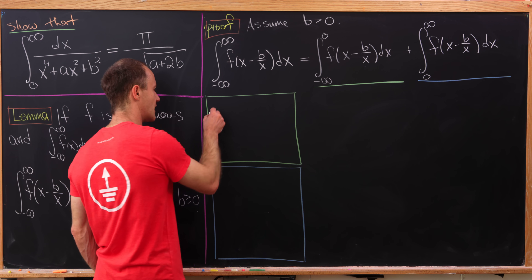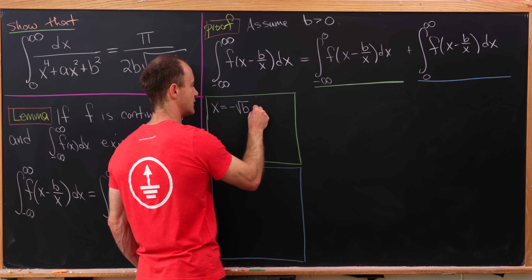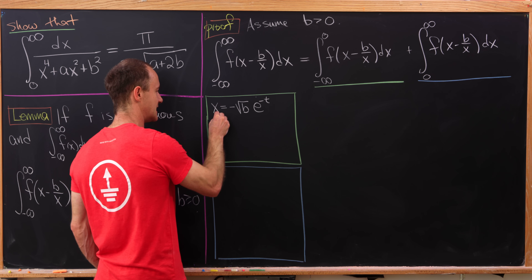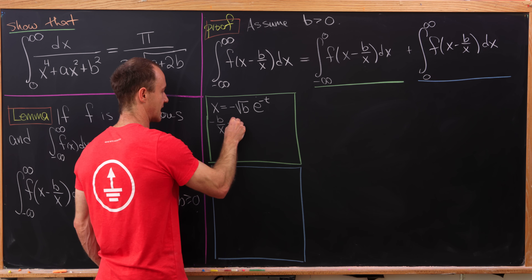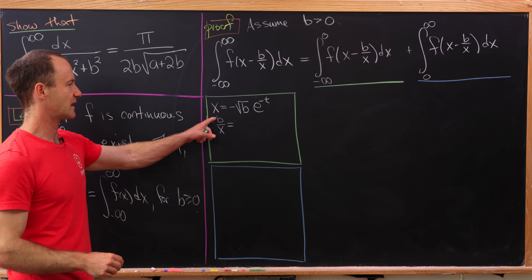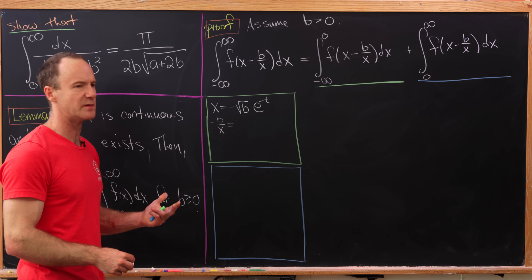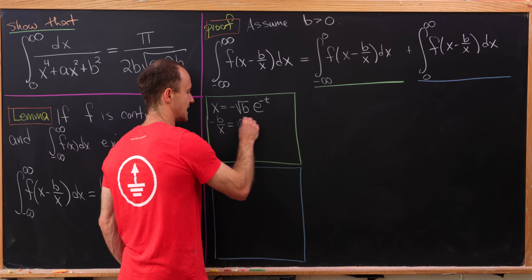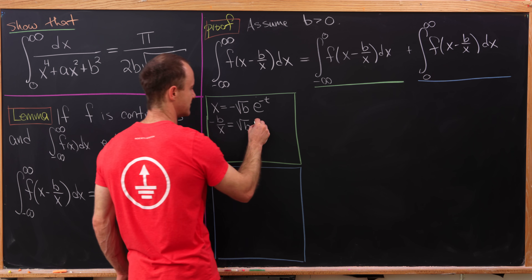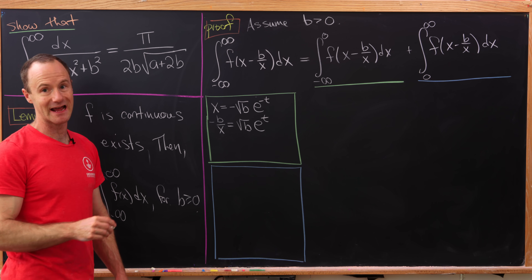For the green underlined substitution, I'm going to take x and set it equal to negative square root of b times e to the minus t. That means that negative b over x equals — the minus signs cancel — and we're left with b over the square root of b, which is simply the square root of b, times 1 over e to the minus t, so that's e to the t. And dx will be the square root of b times e to the minus t dt.